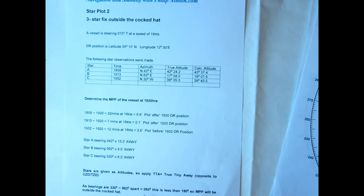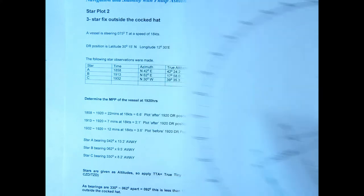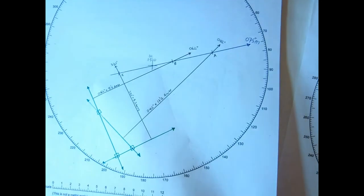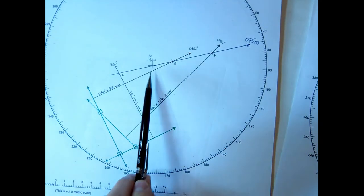As the bearings are 92 degrees apart, this is less than 180, so the MPP will be outside of the cocked hat. So let's look at the first drawing that I've done. There's the DR at 1920.